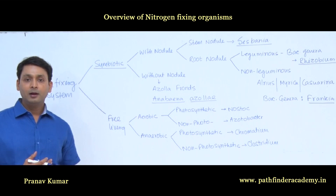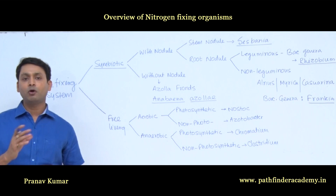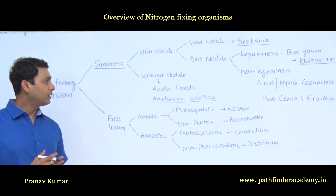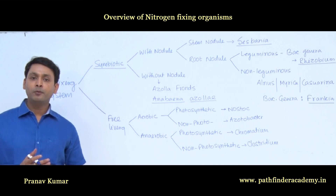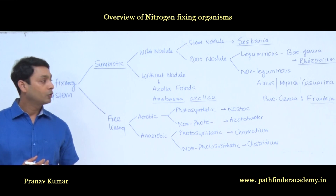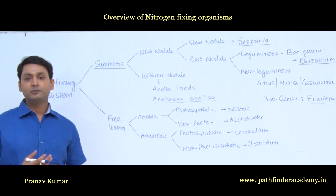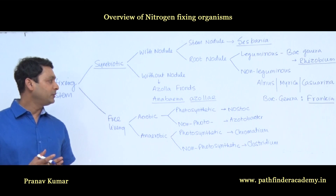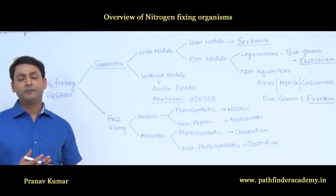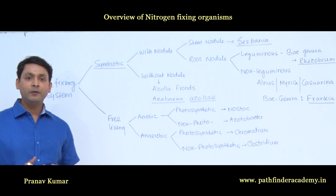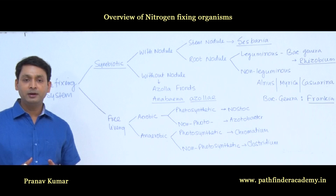Root nodules are common and are reported in both leguminous as well as non-leguminous plants. In the case of leguminous plants, the bacterial genus responsible for root nodule formation is Rhizobium. Whereas in non-leguminous plants, which is not very common, nodule formation is mainly carried out by the bacterial species known as Frankia. Examples of non-leguminous plants where nodule formation occurs include Alnus nepalensis, Myrica, and Casuarina.